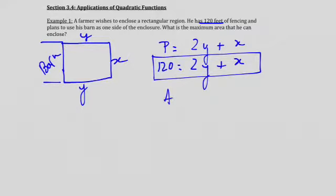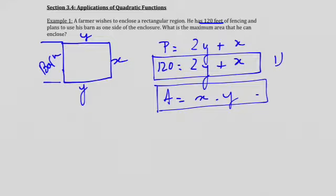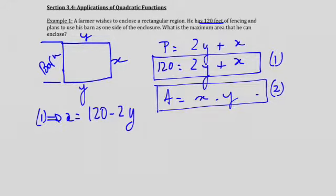Now I know the other equation because it's the area, x by y. So, I'm going to express x from equation number 1. From equation number 1, I'm going to express x, which is going to be 120 minus 2y. Then I'm going to substitute the value of x inside a. So, a is going to become 120 minus 2y times y.